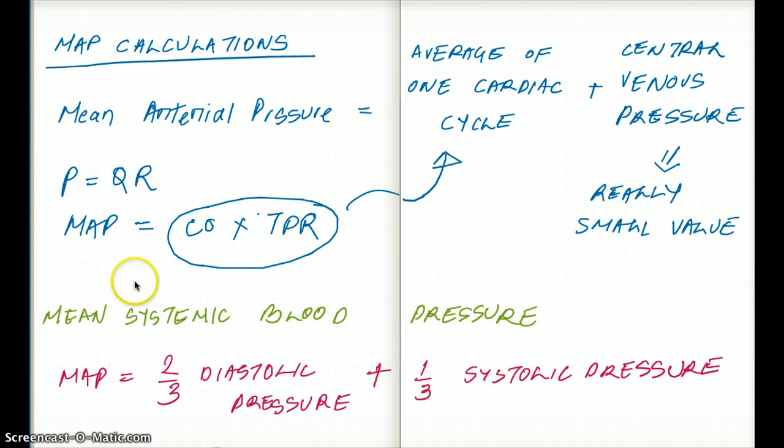You will often see that the mean arterial pressure equation we use when calculating different examples is: mean arterial pressure equals cardiac output times total peripheral resistance. Where is the central venous pressure in this main equation? Often this is so close to zero that we don't even bother with the central venous pressure. This is the more common use of the mean arterial pressure equation.